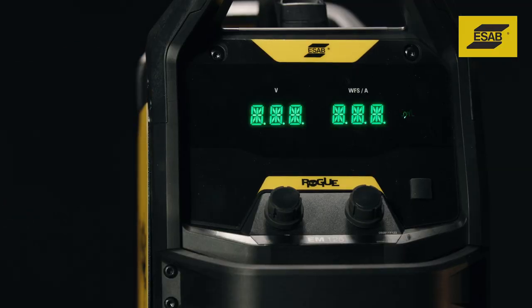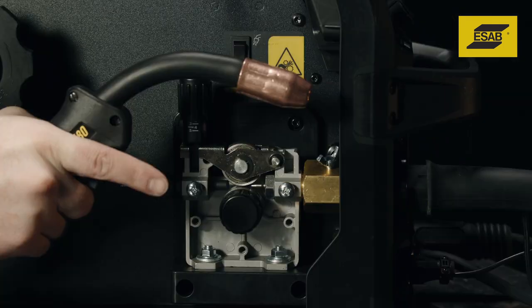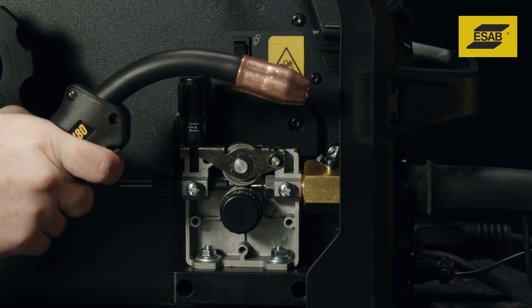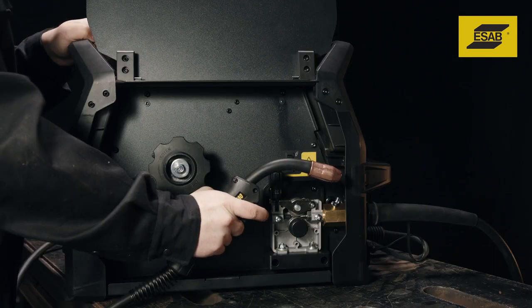Turn the machine on. To confirm gun connection, squeeze the gun trigger. The feed rolls should turn. If they don't, reconnect the plug.